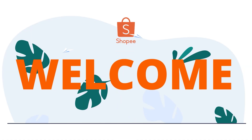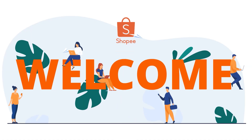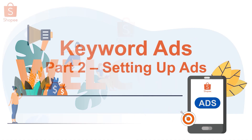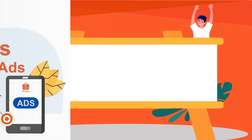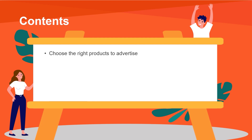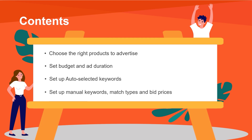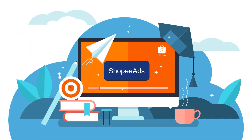Hello and welcome back to Shopee Ads Video On Demand. In this video, you will learn how to set up your first keyword ads. If you're not already familiar with keyword ads, please refer to one of our previous videos. In this video, we will guide you to choose the right products, set budget and ad duration, and how to set up auto-selected keywords, manual keywords, match types and bid prices. Now let's get started.